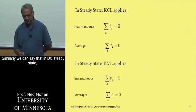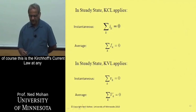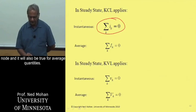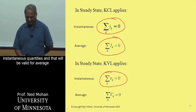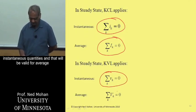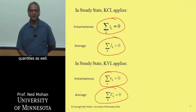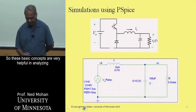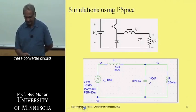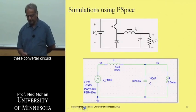Similarly, in DC steady state, Kirchhoff's current law holds at any node and is also true for average quantities. And Kirchhoff's voltage law for instantaneous quantities is valid for average quantities as well. These basic concepts are very helpful in analyzing converter circuits.